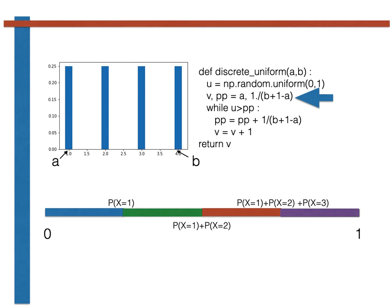As discussed last week, we proceed by testing whether our uniform continuous random variable is less than pp, the probability that x equals a. If the uniform continuous random variable u is less than this value pp, then we know that the uniform discrete random variable should be set equal to a.